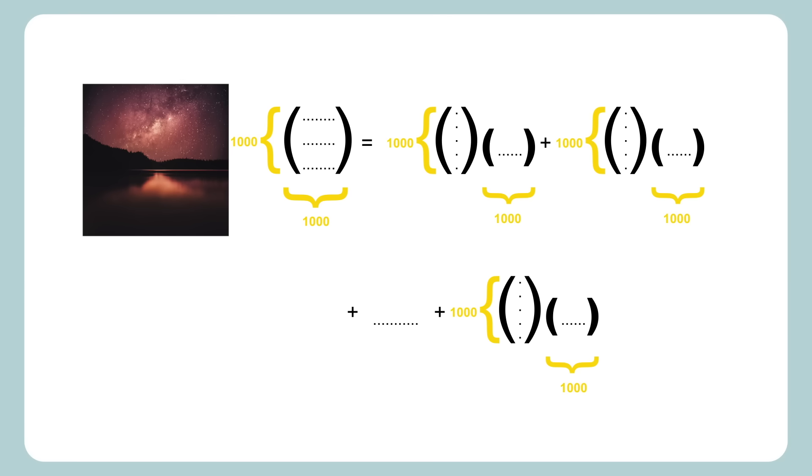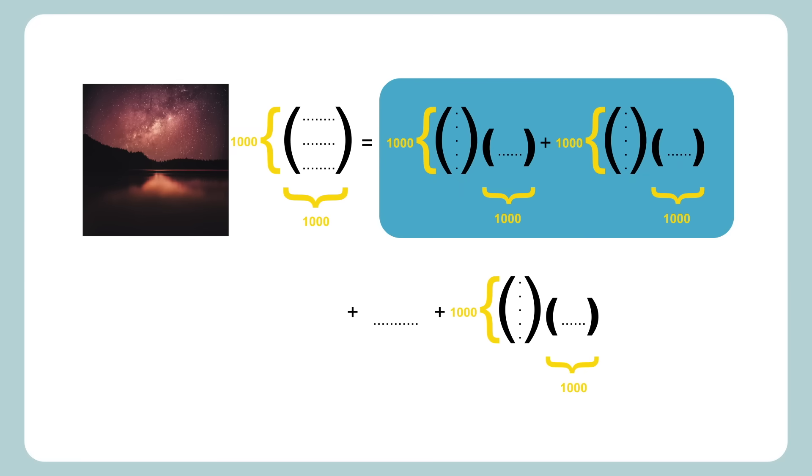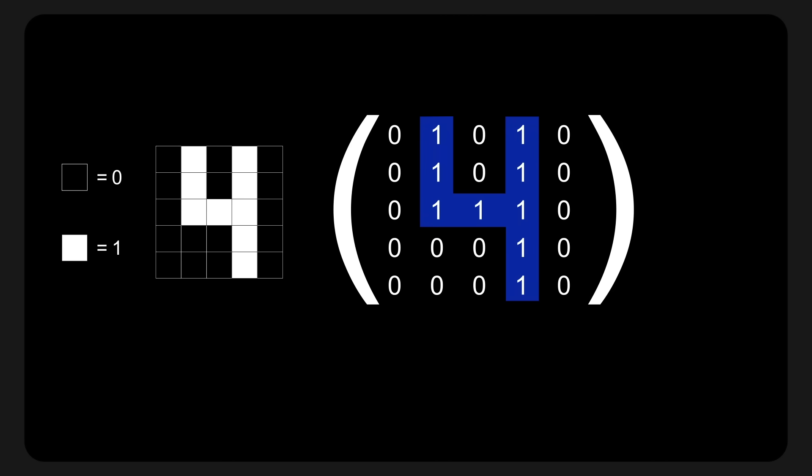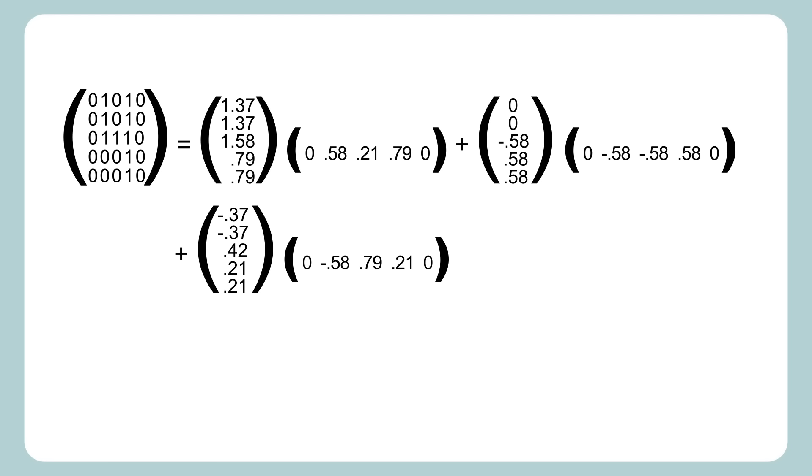So to compress an image, the idea is simple, use only some of the rank one matrices, throw out the rest, and hopefully you get something that looks similar to the original image. So let's see an example. Here's a five by five image of the number four. We'll say a black pixel is represented by the number zero and a white pixel by the number one. Anything in between is just a shade of gray, which is darker if it's closer to zero and lighter if it's closer to one. So here's the matrix representing our image, you can easily see the number four made up of all ones.